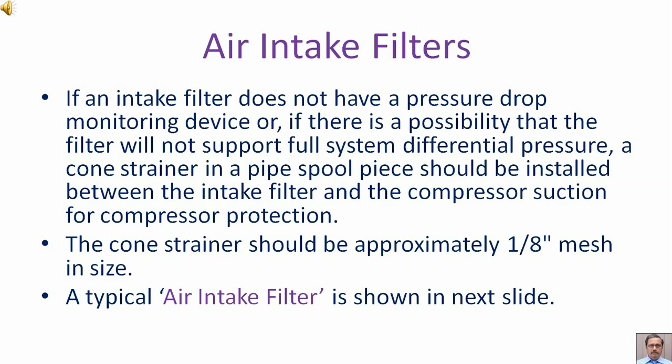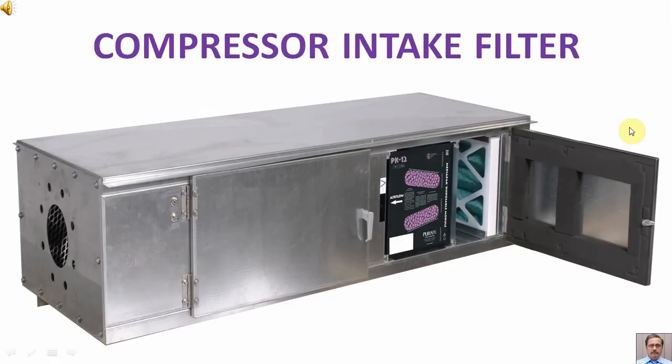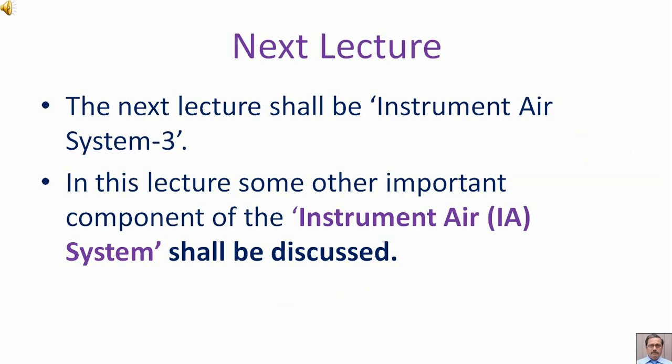The cone strainer should be approximately 1 by 8 inch mesh in size. A typical air intake filter is shown in the next slide. The next lecture shall be Instrument Air System Part 3, in which other important components of the instrument air system will be discussed.